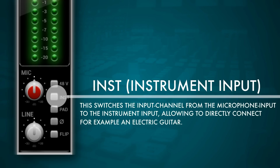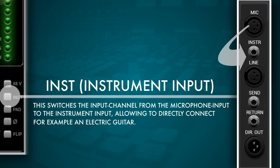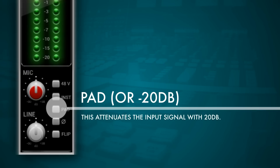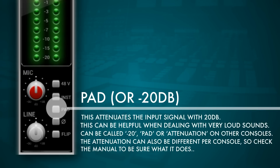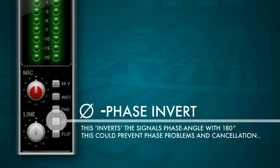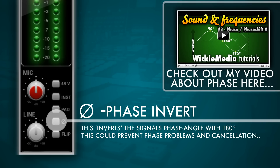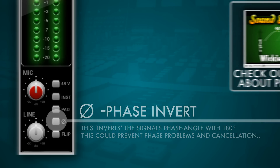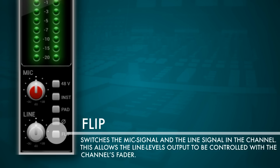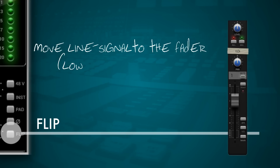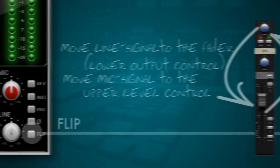The instrument switch changes the input circuitry from the microphone input to the instrument input. The pad switch attenuates the input signal by -20dB — also referred to as a -20dB or -10dB switch — which is really helpful if sounds are constantly overdriving even at the lowest mic input setting. Below that we have the phase reverse switch, which allows a 180-degree invert of the input signal. The flip switch switches between the line and microphone input, allowing us to use the channel fader during mixing.